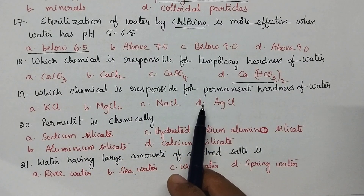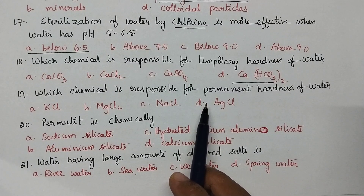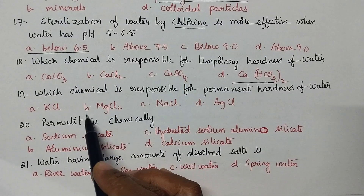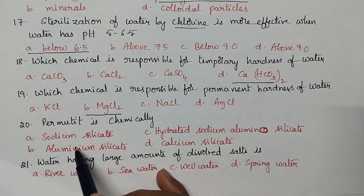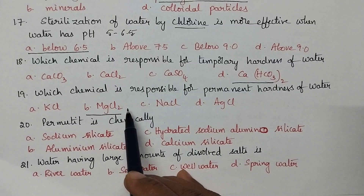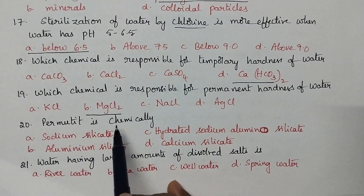Which chemical is responsible for permanent hardness of water? Permanent hardness is generally caused by the chlorides and sulfates of calcium and magnesium. So, magnesium chloride is responsible for permanent hardness of water.